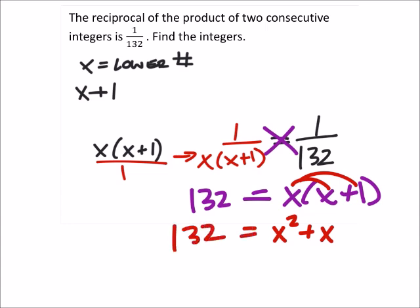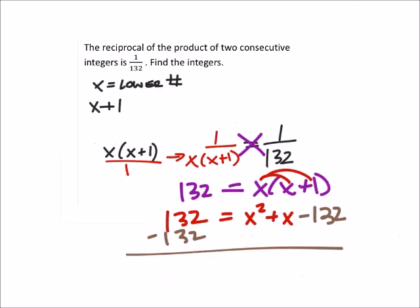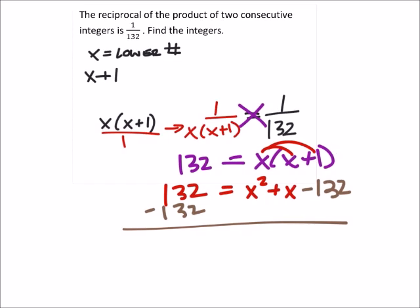This looks like a polynomial that we'll be factoring, right? A quadratic. So minus 132 from both sides so that it equals 0.